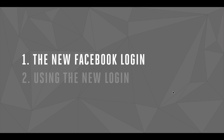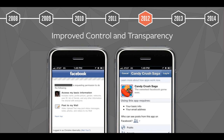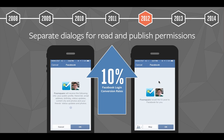Let's start with a brief history lesson about login. Back in 2012, our login dialogue for mobile presented a lot of information, including asking people to select which audience they wanted the app to post to. But people gave us feedback that it was too complicated. So in 2013, we decided to split read and write permissions. Read permissions is people sharing information with the app, and write permissions is the app asking for permissions to post back to Facebook. Just splitting these two permissions led to a 10% increase in Facebook login conversion rates.